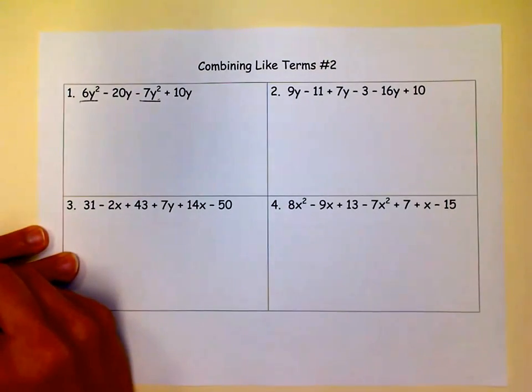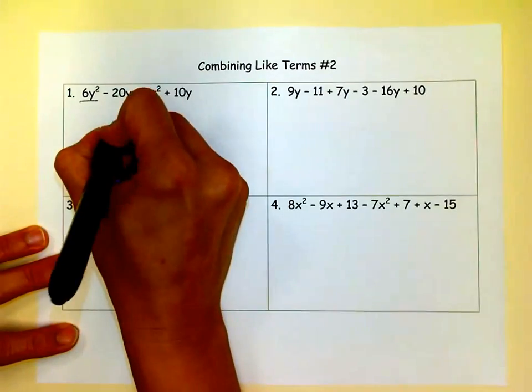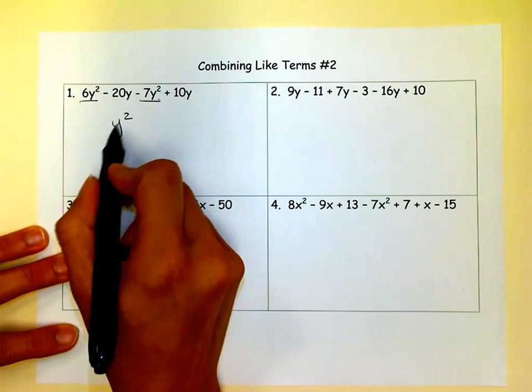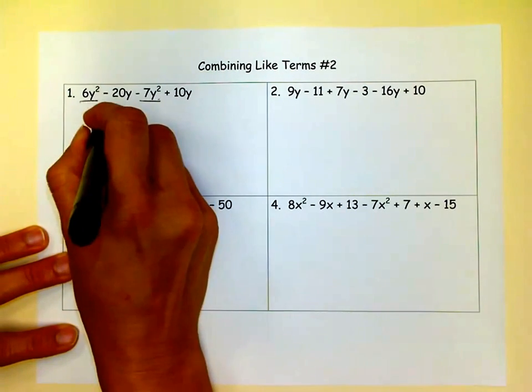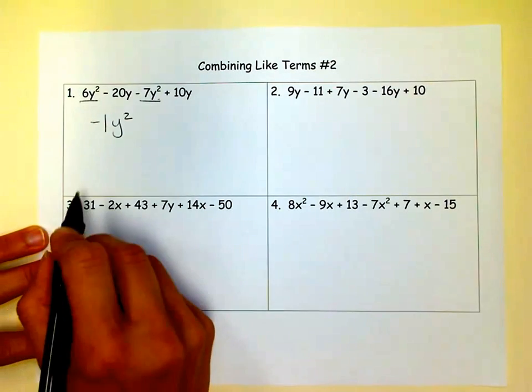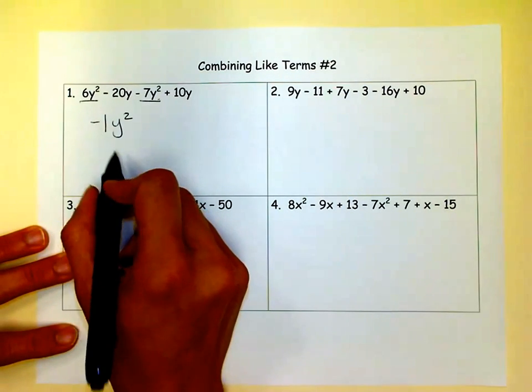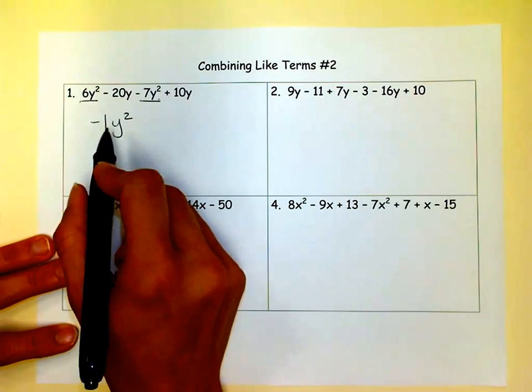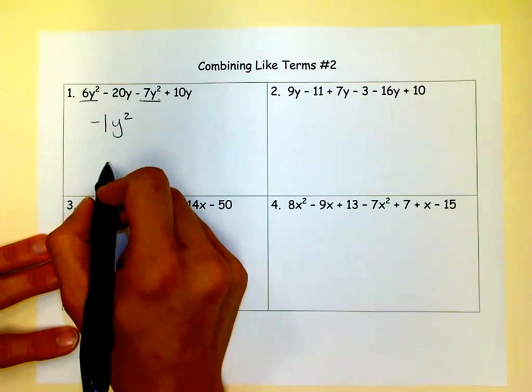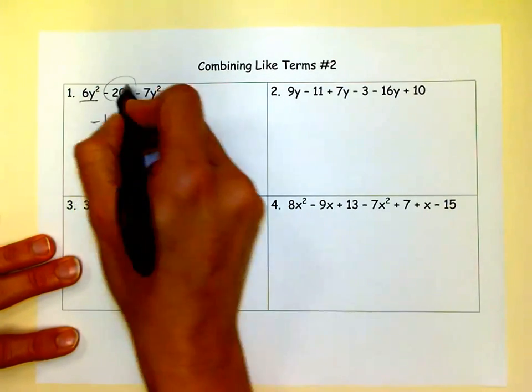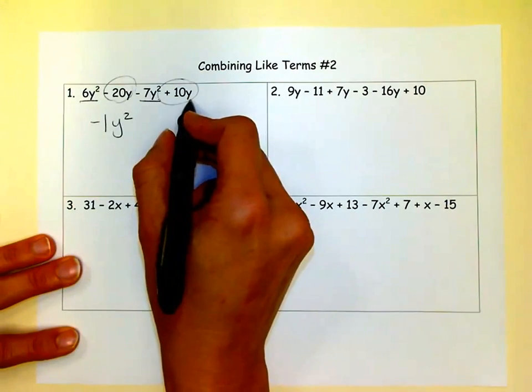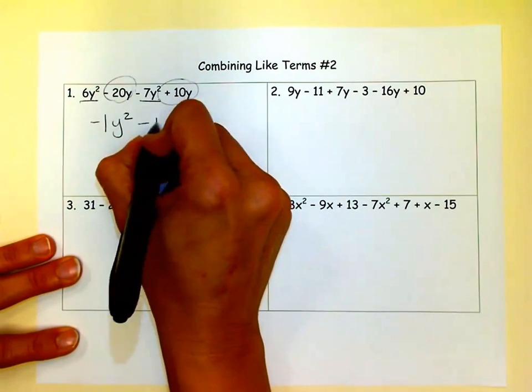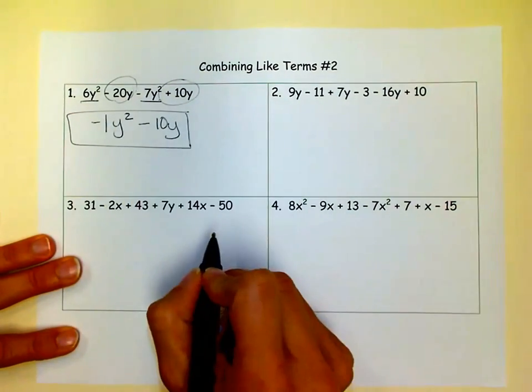These are exactly the same variable parts. So when they're the same variable parts, we know we're going to have Y squareds, and we're going to have 6Y squared minus 7Y squared. That's a negative 1Y squared. And it's okay to just put minus Y squared too, if you don't want to put the 1 there. That only works for 1, though. Everything else you have to put there. So then we have a negative 20Y and a positive 10Y, and a negative 20 plus 10 is a negative 10Y. And then we are all simplified.